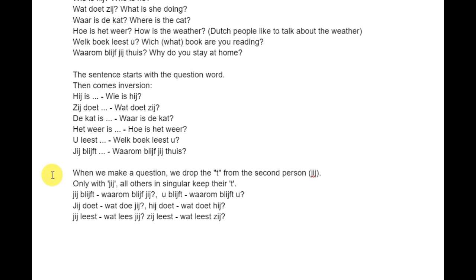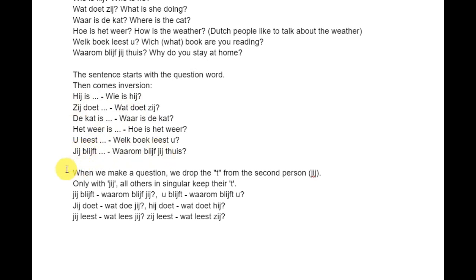Ze doet — third person singular — so doet zij, we keep the T. Jij blijft — second person singular — so waarom blijf jij thuis, we drop the T. We drop the T when it's a question, but only with jij, not with any other.